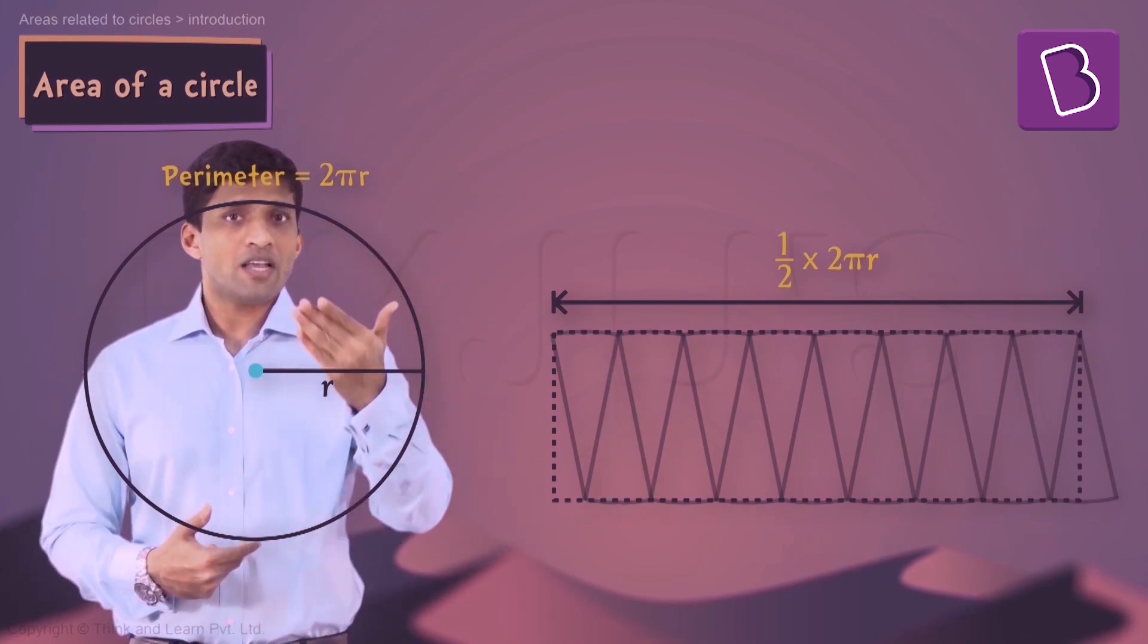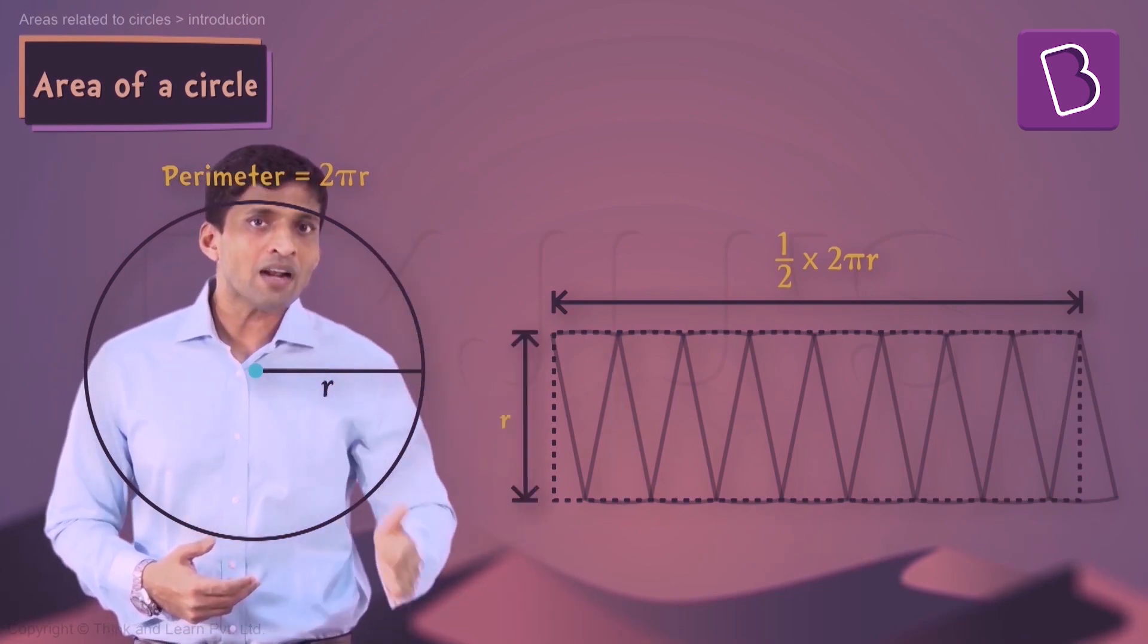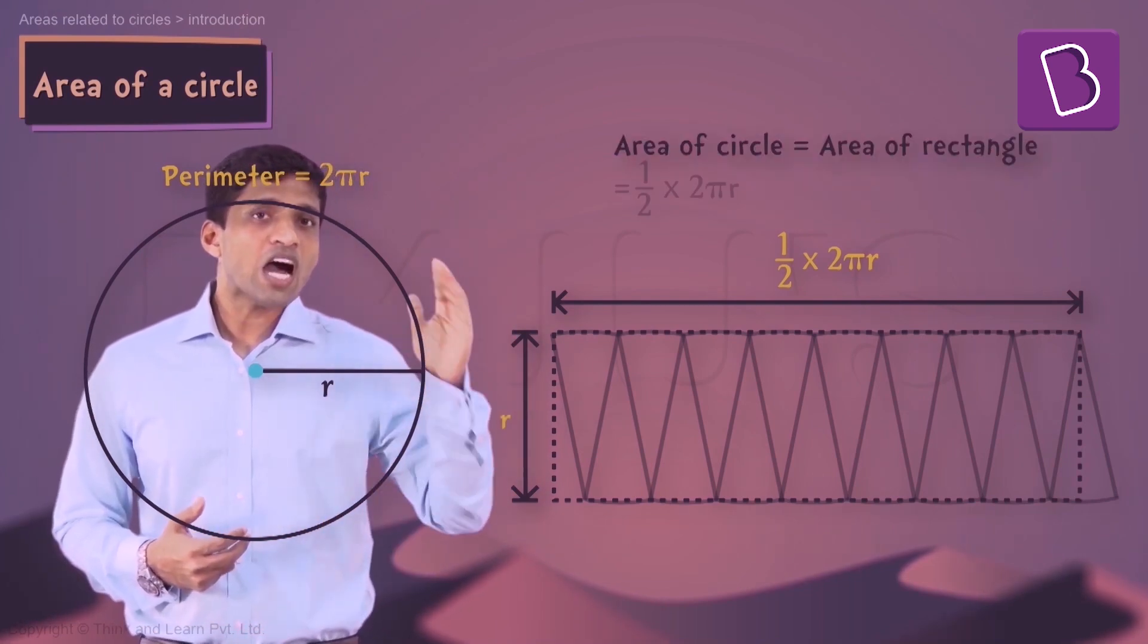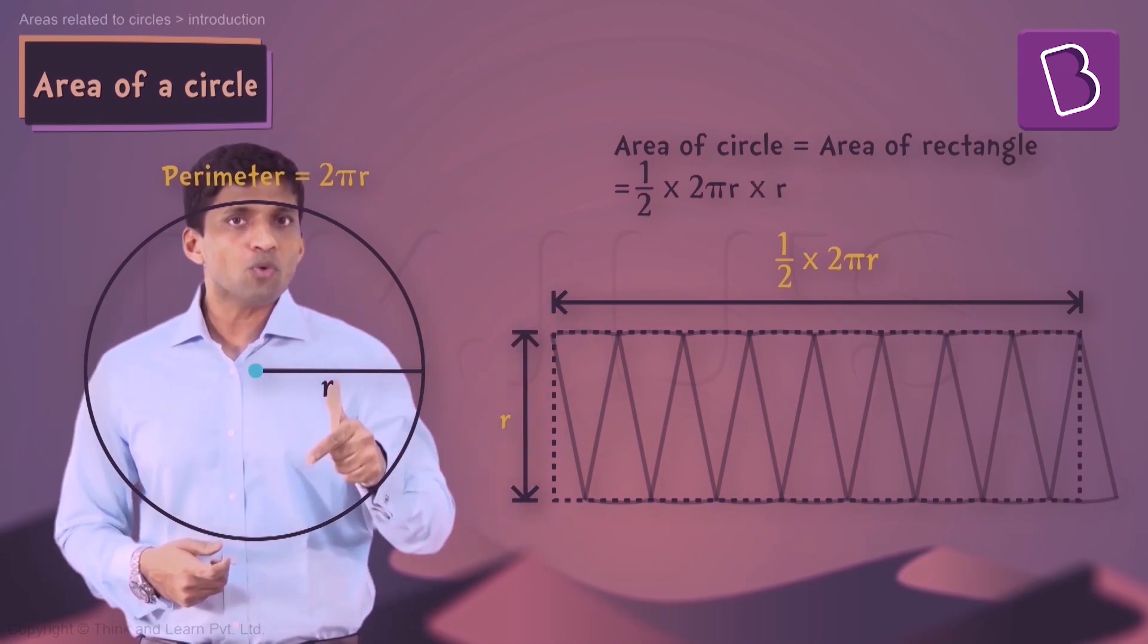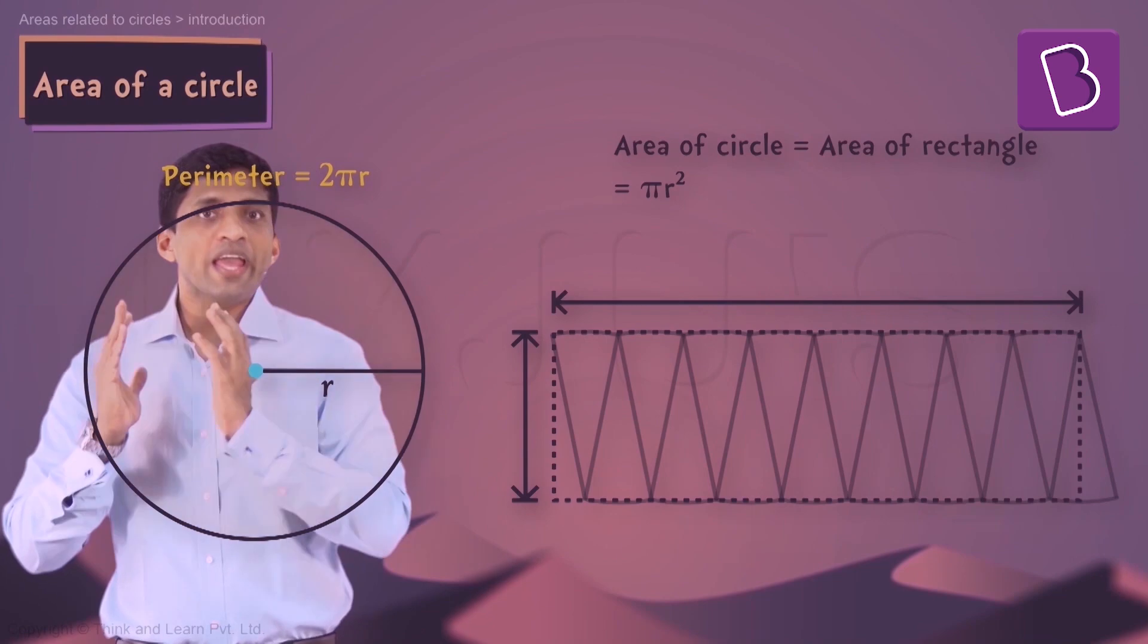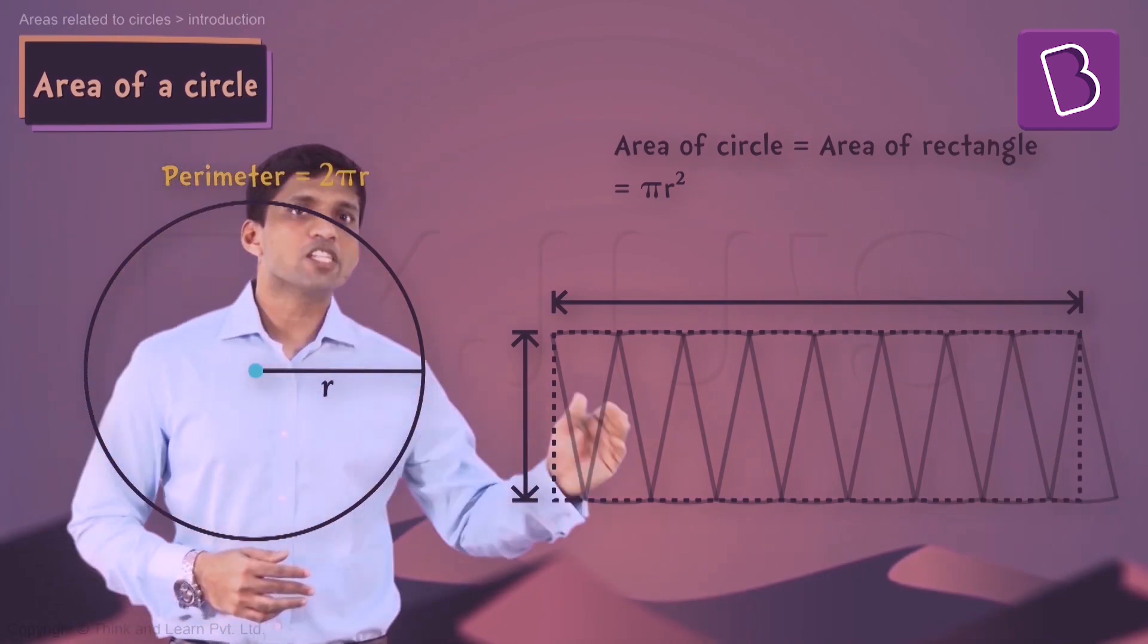Breadth of this rectangle as you can easily visualize is nothing but r. So area of this rectangle will be product of length and breadth which is half of 2πr × r. So we will get πr². So what we did here is nothing but area of a circle visualized using a rectangle.